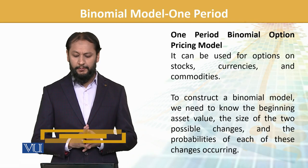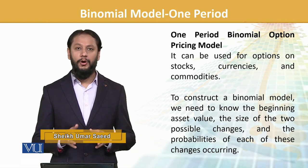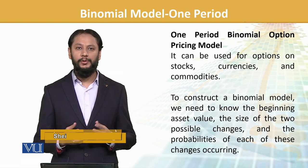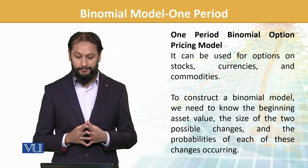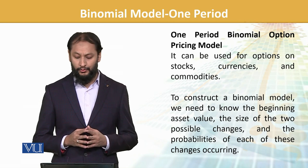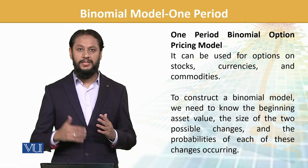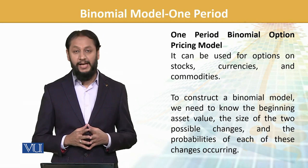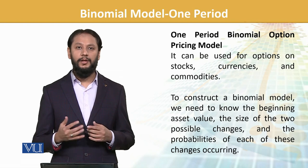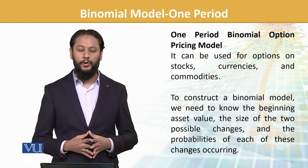The one-period binomial option pricing model can be used for options on stocks, currencies, and commodities. To construct a binomial model we need to know the beginning asset value, the size of the two possible changes, and the probabilities of each chance. These are the data which we will require to make a binomial model.